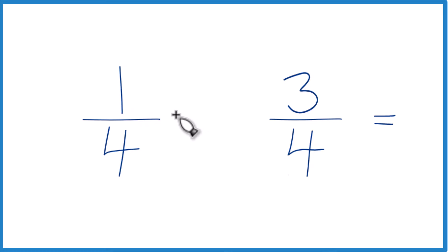So we could say one-fourth times three-fourths instead of one-fourth of three-fourths. Then it gets a lot easier.